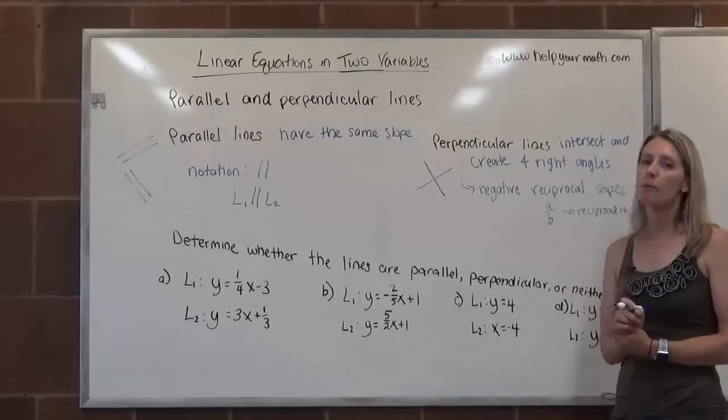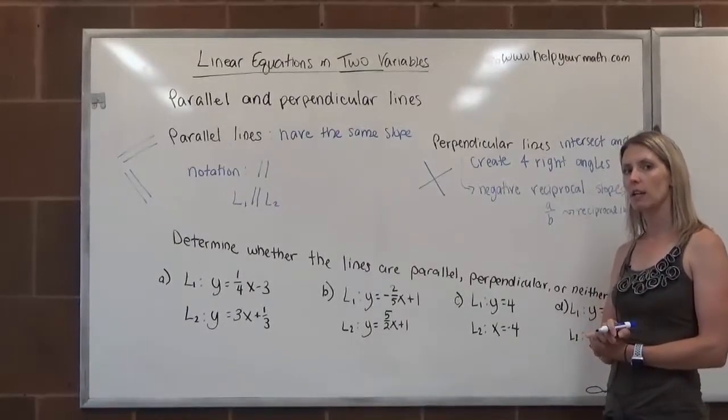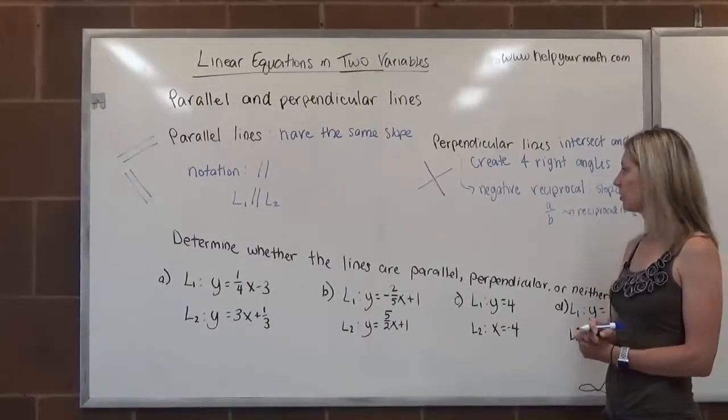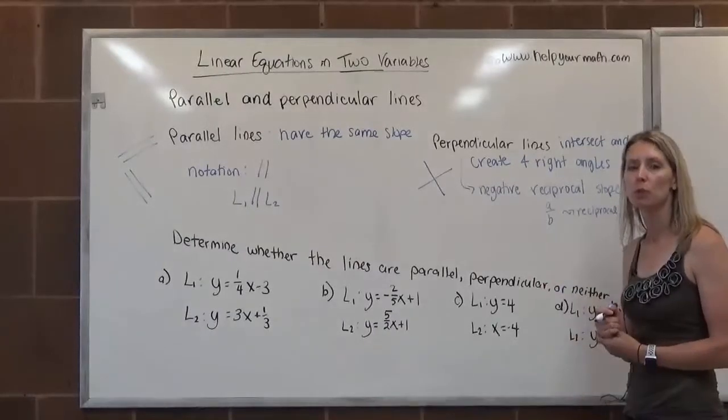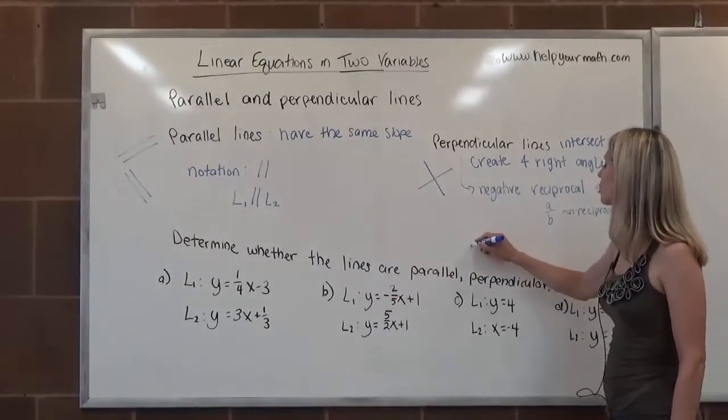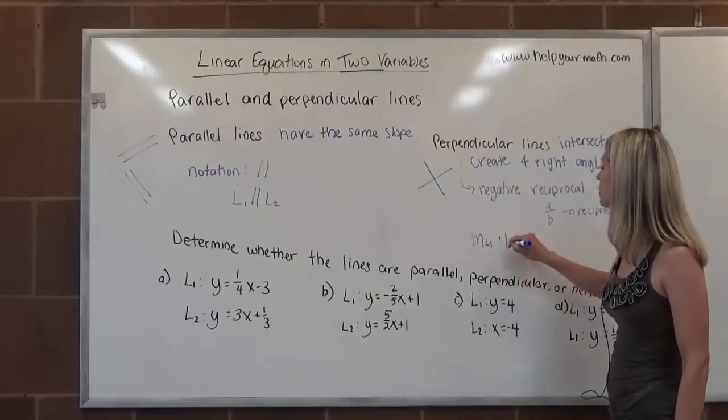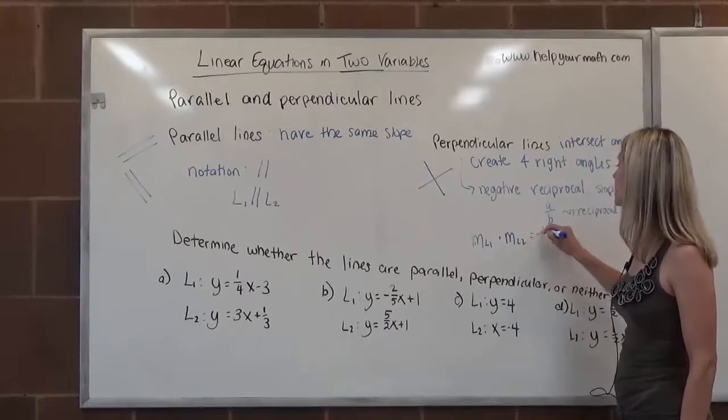Another way that we might think about perpendicular lines: their slopes multiply to negative one. So if you were to multiply the two slopes, the result would be negative one. So the slope of L1 times the slope of L2 is negative one.